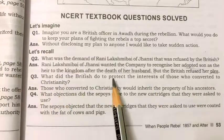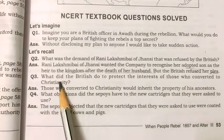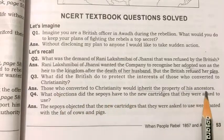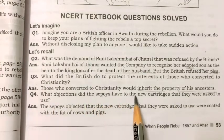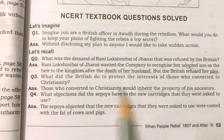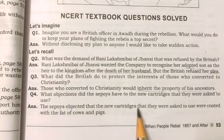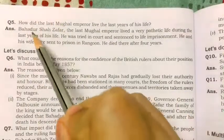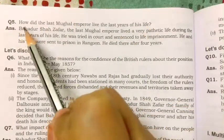What did the British do to protect the interest of those who converted to Christianity? Those who converted to Christianity would inherit the property of their ancestors. What objections did the sepoys have to the new cartridges they were asked to use? The sepoys objected that the new cartridges were coated with the fat of cows and pigs.